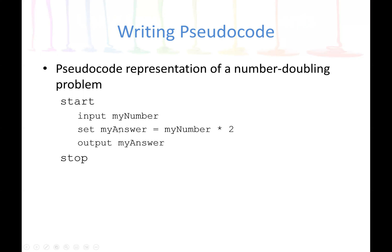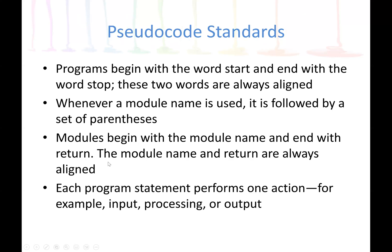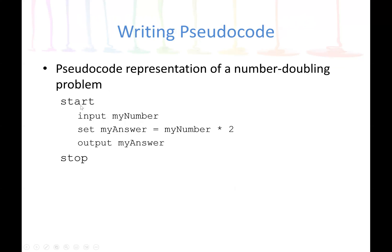Then we output the result stored in 'myAnswer'. So the pseudocode starts with 'start', has input, then the process using 'set', then the output result, and ends with 'stop'. Programs begin with the word 'start' and end with the word 'stop', and these two words are always aligned. In our example, you can see 'start' and 'stop' are aligned together.